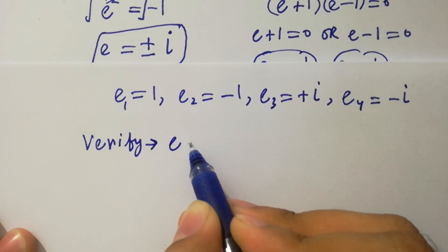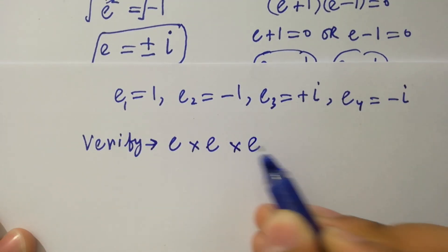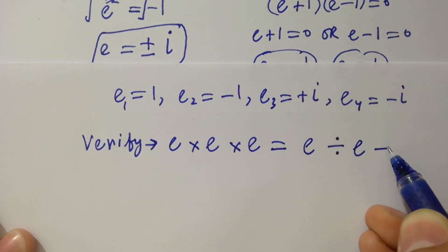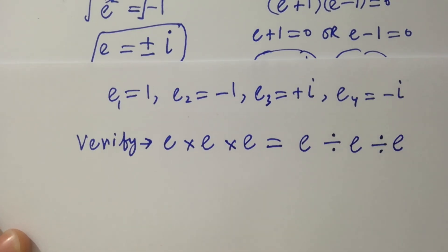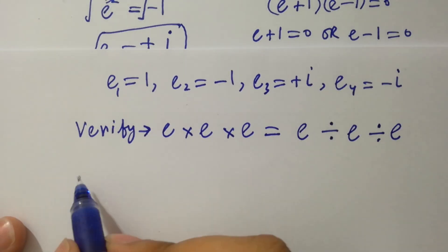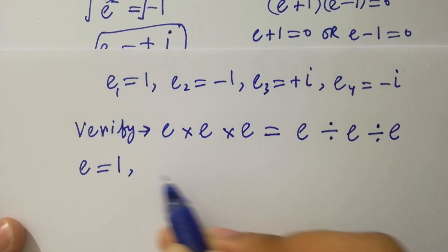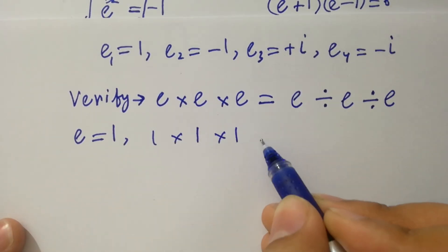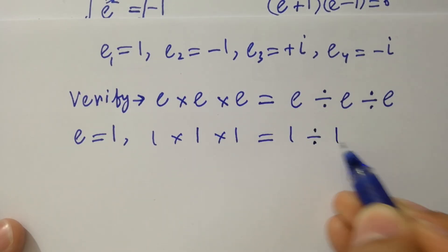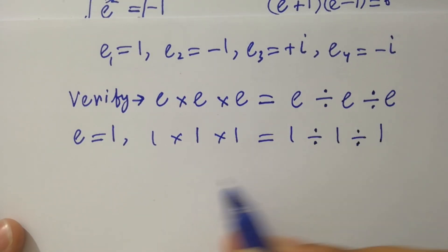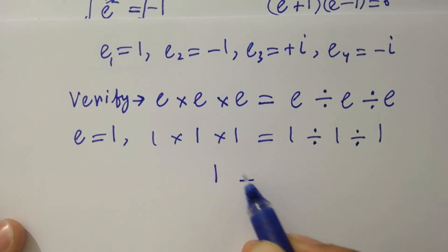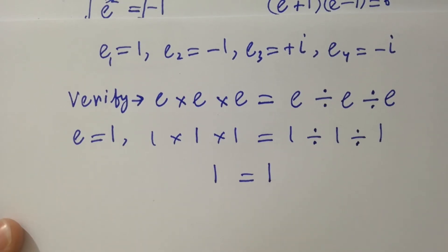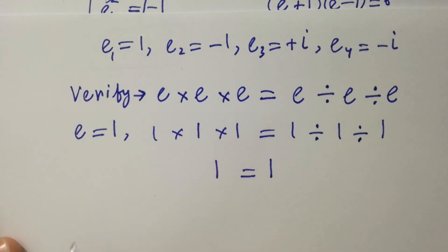Verifying using e times e times e equals e divided by e divided by e. First, take e equals 1: then 1 times 1 times 1 equals 1 divided by 1 divided by 1, giving 1 equals 1. Left hand side equals right hand side. ✓